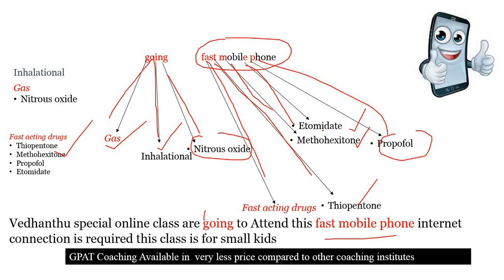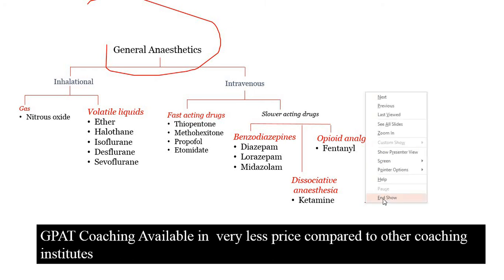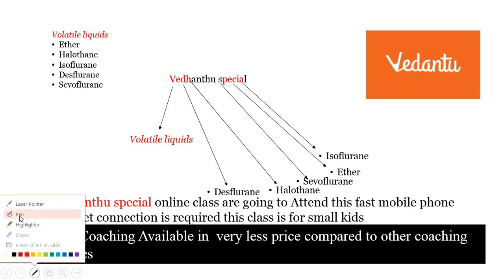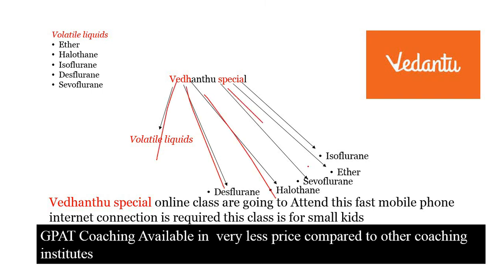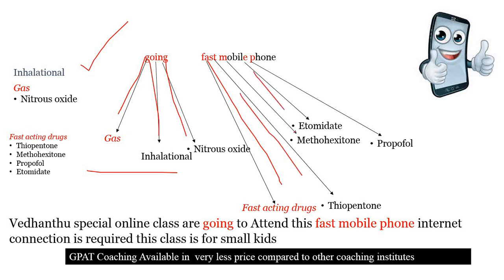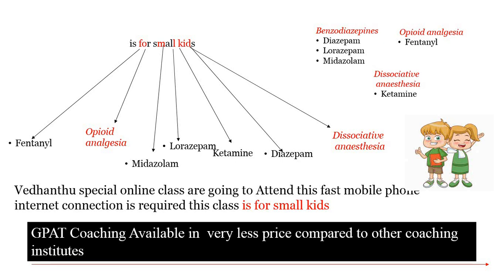To revise: VEDANTHU SPECIAL — V=Volatile liquids, D=Desflurane, H=Halothane, S=Sevoflurane, I=Isoflurane, E=Ether. GOING ON — G=Gas, I=Inhalational, N=Nitrous oxide. FAST MOBILE — F=Fast-acting, T=Thiopentone, E=Etomidate, M=Methohexitone, P=Propofol. SMALL KIDS — F=Fentanyl (opiate analgesia), M=Midazolam, L=Lorazepam, D=Diazepam (benzodiazepines), K=Ketamine (dissociative anesthesia). This is an easy way to learn for your SIM, mid exam, and GPAT exam.